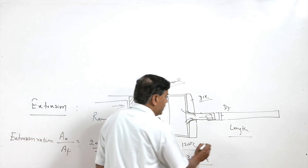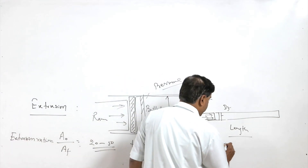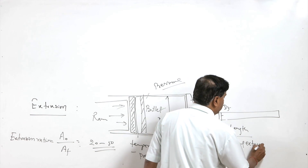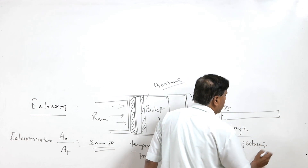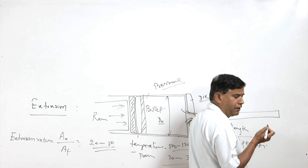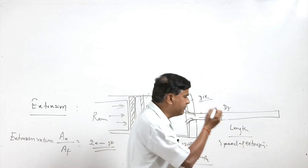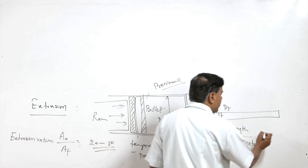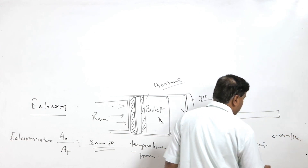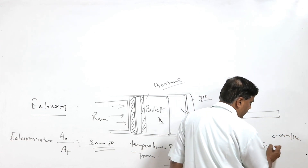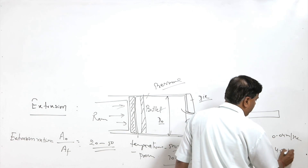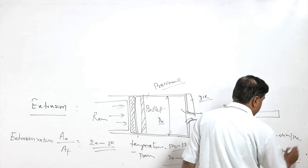The speed of extrusion — the speed at which metal comes out — may vary significantly. For non-ferrous metals like aluminium and magnesium it is very low, 0.04 meters per second, and for heavy metals like copper it is about 4.5 meters per second.